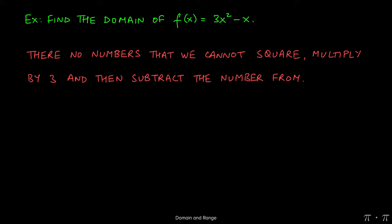So whenever there are no excluded values or no numbers that are tripping us up, we can say that the domain is negative infinity to positive infinity. Different instructors or different textbooks might refer to this also as all real numbers.